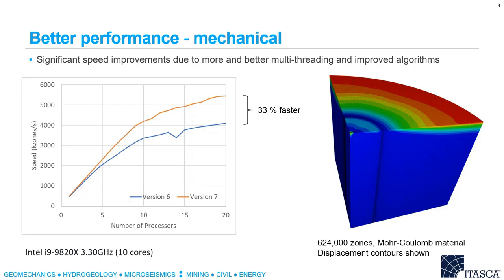The next few slides show graphs with speed on the y-axis and number of processors on the x-axis. As you run these with more processors they get faster — they are multi-threaded. These were all run on an i9 desktop with 10 cores, so 20 processors. For basic mechanical calculations — a simple punch-type problem with a load on the surface and Mohr-Coulomb material — this simple model runs about 33 percent faster in version 7 than it did in version 6. So a model that used to take three hours will now take maybe two hours.